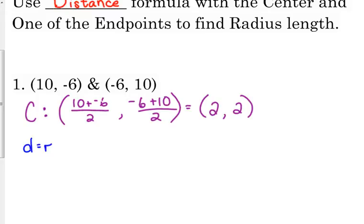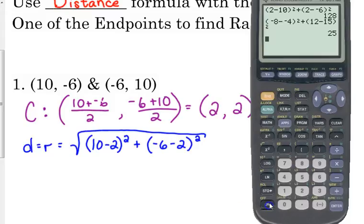Now we're going to use the distance formula. I'm going to say D equals R, so I keep it in my head that this distance is my radius. So that's the square root of, like I said, I just used the first point. 10 minus 2, the first point and my center. 10 minus 2 squared plus negative 6 minus 2 squared. So then I'm going to type everything under the square root into my calculator. And if you look at my calculator, you'll see that I did this in first period, and I did it the other way, but you still get the same answer.